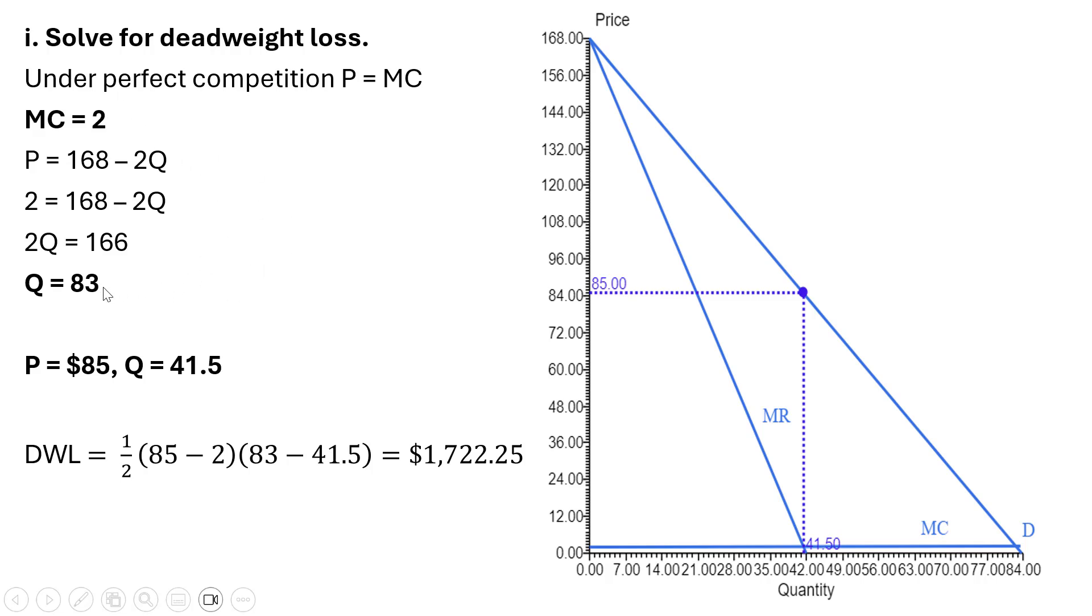So our key bits of information to get the deadweight loss: the marginal cost, the quantity under perfect competition, the quantity under monopoly, and the monopoly price. The deadweight loss is going to be this triangle between the height of the demand curve and marginal cost. These units are not being purchased under monopoly. And so that is going to be the deadweight loss because these units have more marginal benefit than marginal cost, yet they're not being bought or sold under monopoly. The area of that triangle is going to be one-half 85 minus 2, times 83 minus 41.5. We get a value here of a little over $1,700.